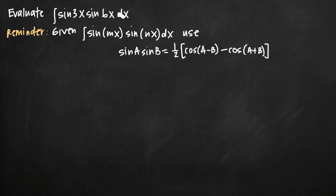As it stands, it seems like it would be difficult to simplify and evaluate, but given this particular form of an integral, we can use this simplifying identity here for sine of a times sine of b.